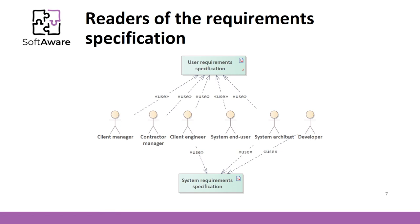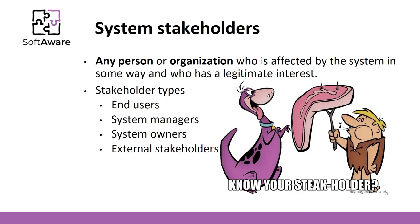In this slide, you can see a diagram that shows who reads the user requirements and system requirements. Only client engineers, system architects, and developers are interested in system requirements. Usually, a system architect is an intermediary who knows and understands all requirements from both sides.